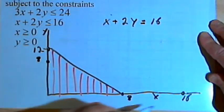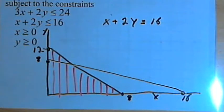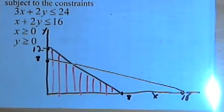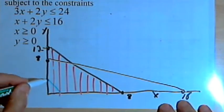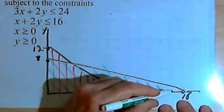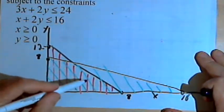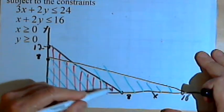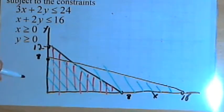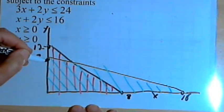So I've got that y-intercept at 8, and I'll connect those two dots, those intercepts, and shade underneath that line. Now the region I'm dealing with, what we call the feasible region, is this part where both of the shadings overlap. The next thing we want to do is find the corner points for that feasible region.